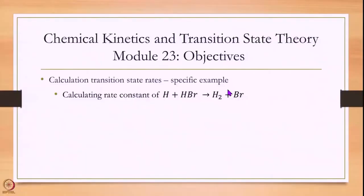Hello and welcome to module 23 of Chemical Kinetics and Transition State Theory. Now we have a final formula for transition state rate. Today we will look at a specific example of how numbers are exactly evaluated. We will look at the example H plus HBr going to H₂ plus Br.